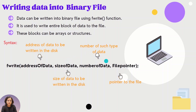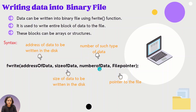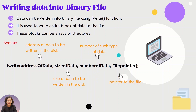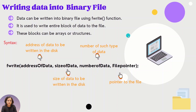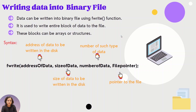The third argument is the number of instances — that is, how many instances of that block we are going to use. The fourth argument is the file pointer. Let me now explain how to write data to the binary file using a program.